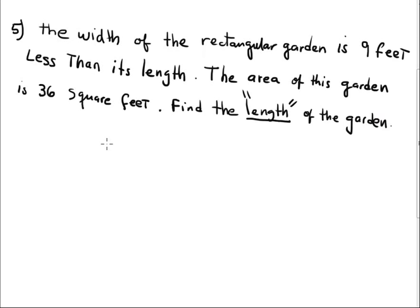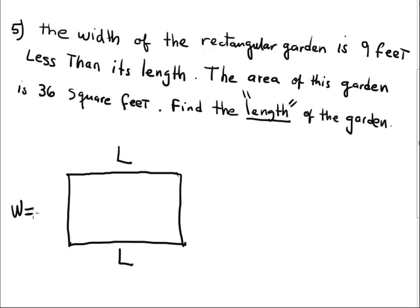Okay, this number 5 is a word problem that is solved possibly by quadratic equation. So we have a rectangular garden. I suppose that the length is L and the width is W. The width is 9 feet less than the length, L minus 9.